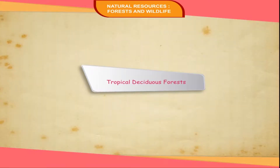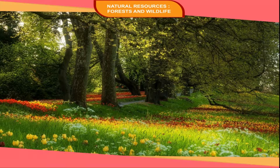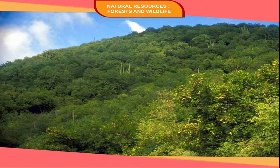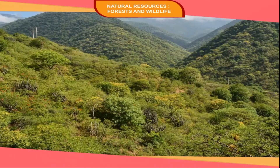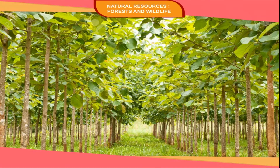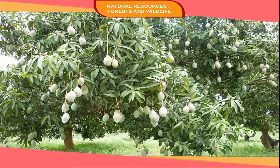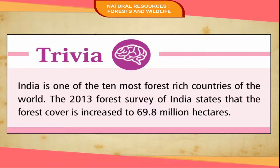Tropical deciduous forests are found in areas of moderate rainfall — 80 centimeters to 200 centimeters. The seasonal contrast of temperature and rainfall affects their growth; they are of deciduous nature. These forests are found on large parts of the peninsular plateau. Teak, sal, shisham, neem, and mango are the main species grown here.